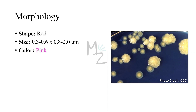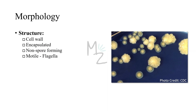Morphology: Enterobacter cloacae is a rod-shaped bacterium. It varies in size from 0.3–0.6 by 0.8–2 micrometers. It is pink colored because it is gram negative. Structure: it has a cell wall, is encapsulated, does not form spores, and is motile due to the presence of flagella.